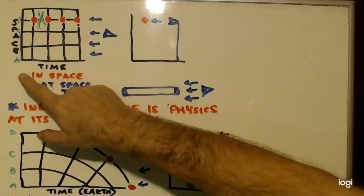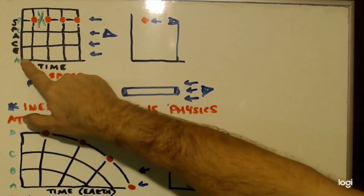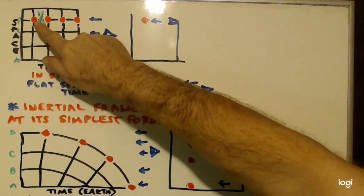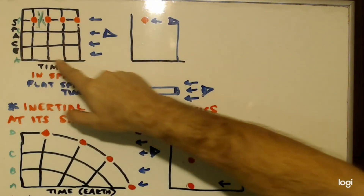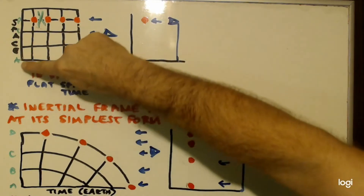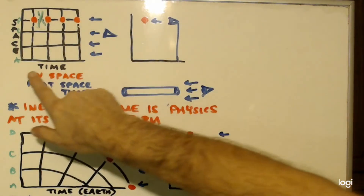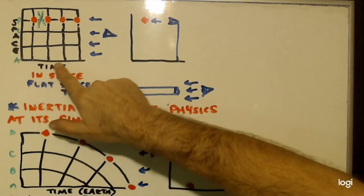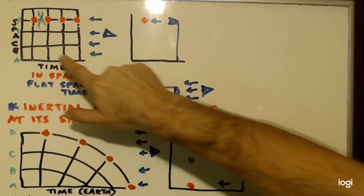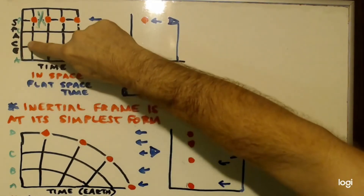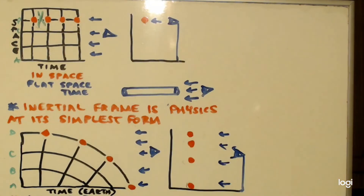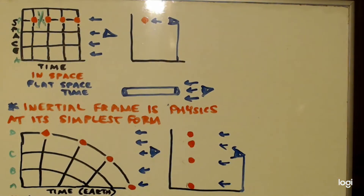Now I want you to think of this: you're in a spaceship. This is the floor and this is a ball. We're going to graph it — this axis is time, and this axis is space. So this would be one second, two seconds, three seconds, four seconds, and so on. And this would be space coordinates A, B, C, and D.